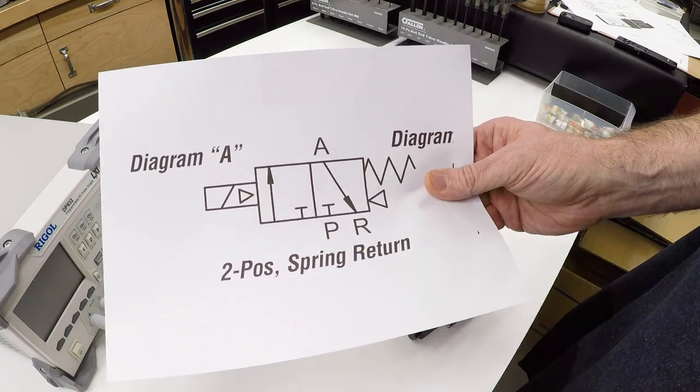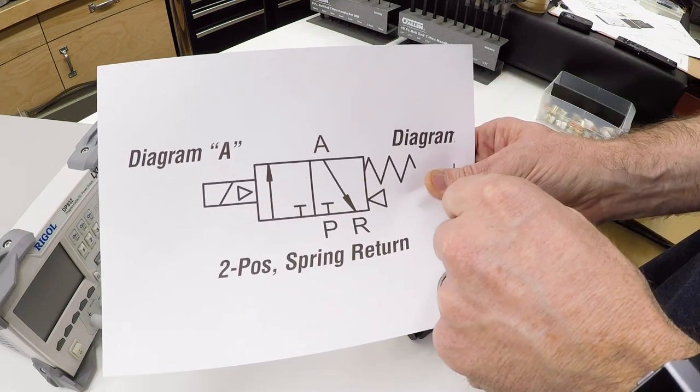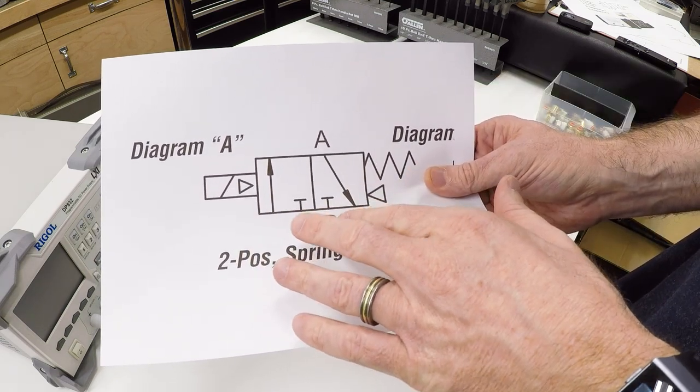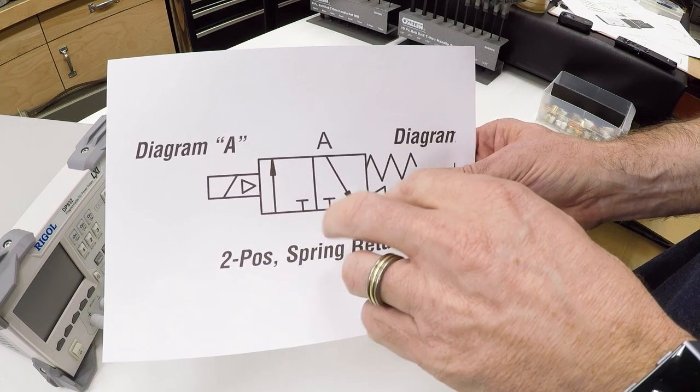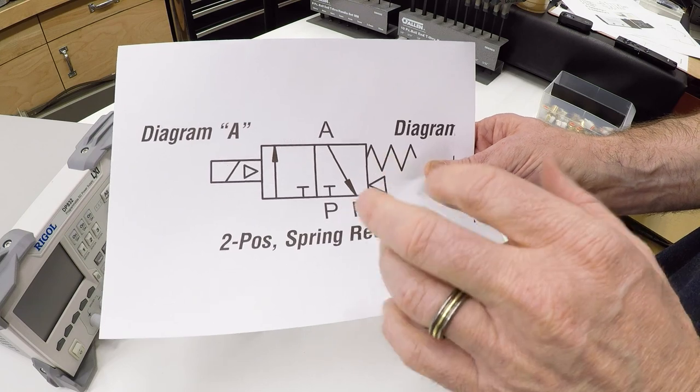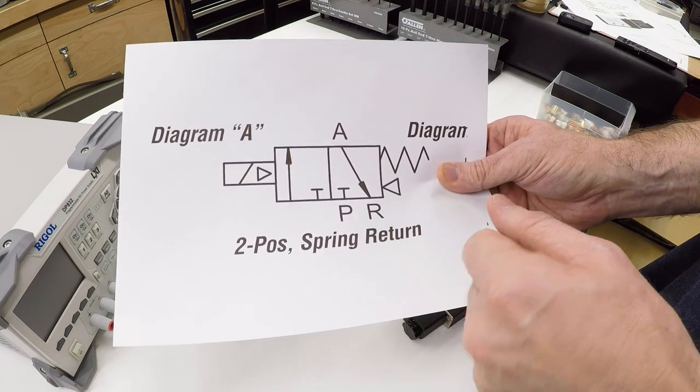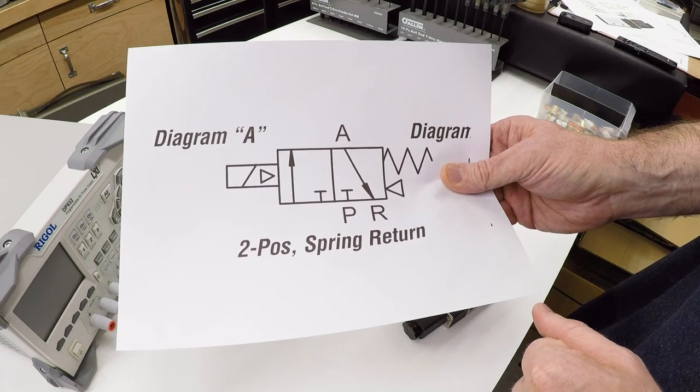These valves require less current generally on the electromagnet, and they also move more rapidly. Many of these valves are rated to switch at five hertz, like five times per second. They can change position. The valves can do that with the pilot assist.